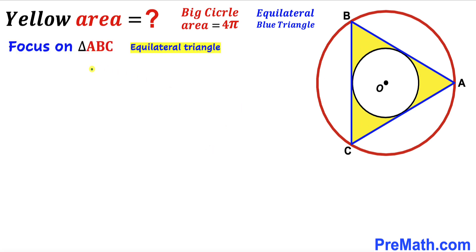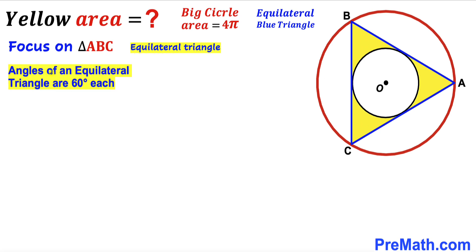Let's get started. Our first step is to focus on the blue triangle ABC. We know this is an equilateral triangle, and recall that the angles of an equilateral triangle are 60 degrees each, so all three angles are 60 degrees.